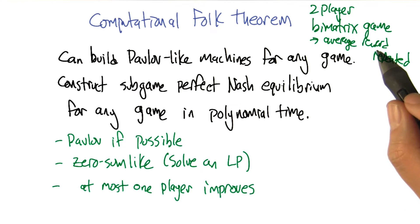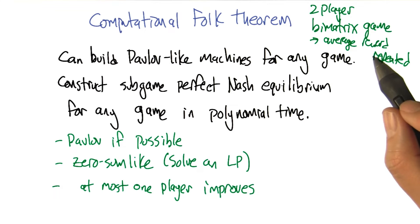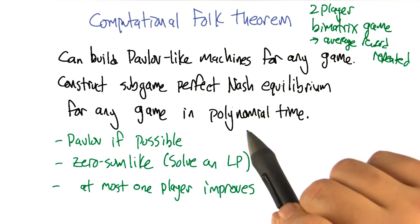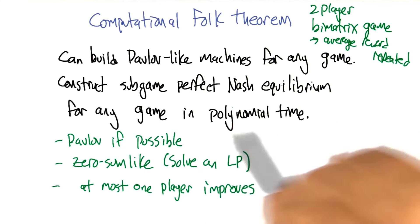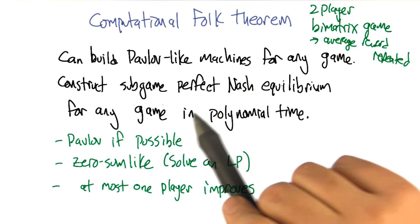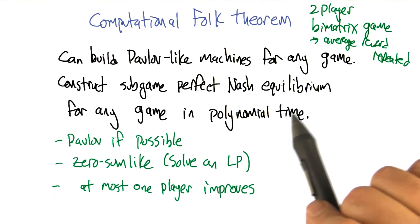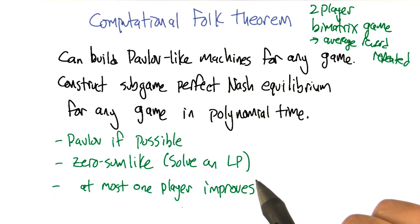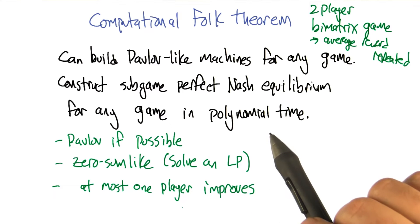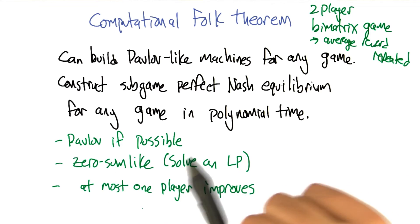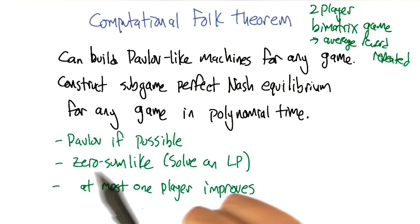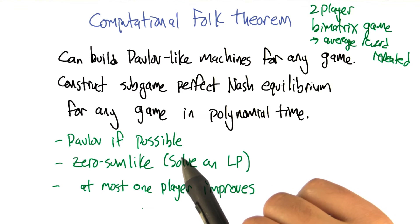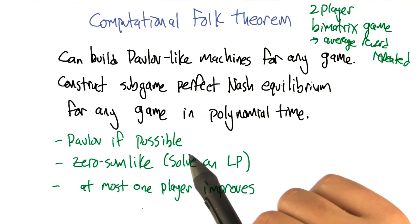So you give me one of those games, and what I can do is build a Pavlov-like machine for any of these games, and use that to construct a sub-game perfect Nash equilibrium for any of these games in polynomial time. The way this works is: if it is possible for us to have some kind of mutually beneficial relationship, then I can build a Pavlov-like machine quickly.